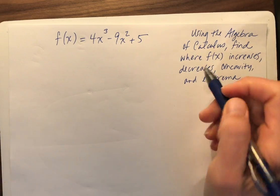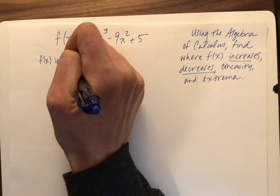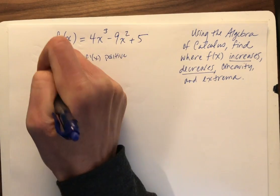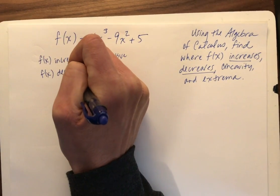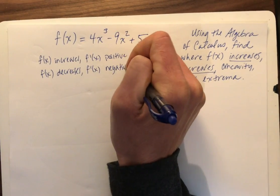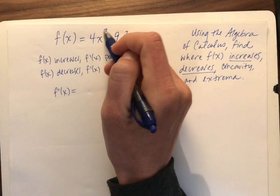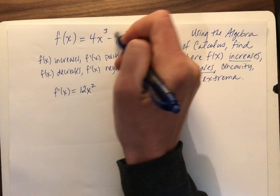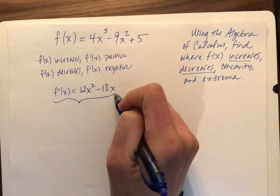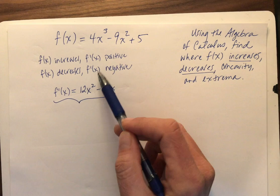So I'm going to start with the increasing and decreasing. So I know f(x) increases, f'(x) is positive. And then f(x) is decreasing, f'(x) is negative. So if I can figure out f'(x), which I know I can do quickly here, bring down the three, 12x² minus 18x, the 5. I can now figure out increasing and decreasing intervals by finding when is f'(x) positive, when is f'(x) negative.